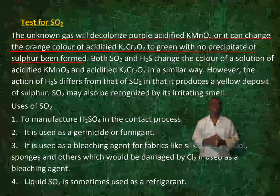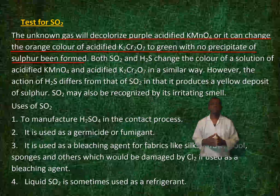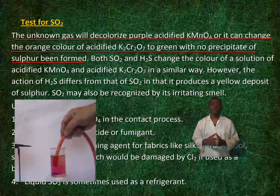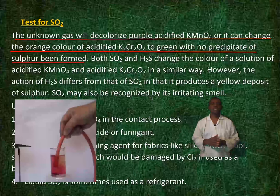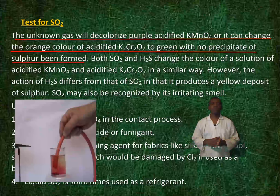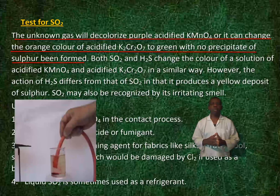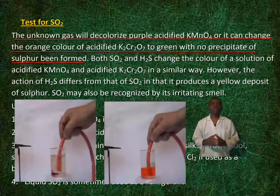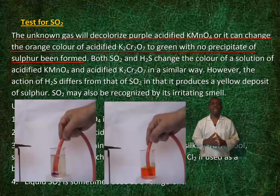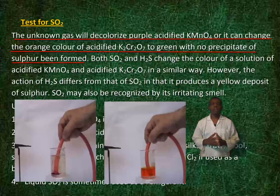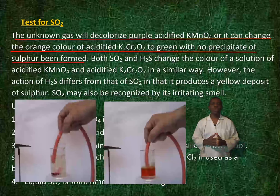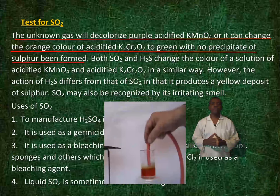Test for sulfur dioxide: the unknown gas will decolorize purple acidified potassium permanganate, or it can change the color of acidified potassium dichromate to green, with no precipitate of sulfur being formed.